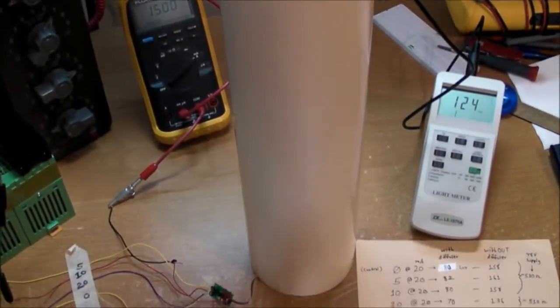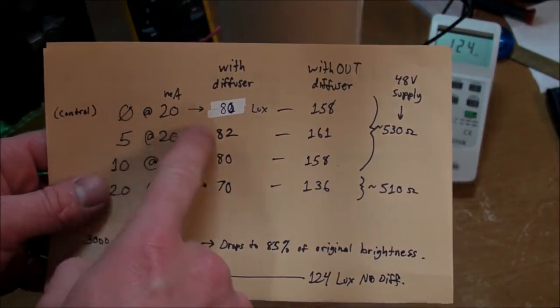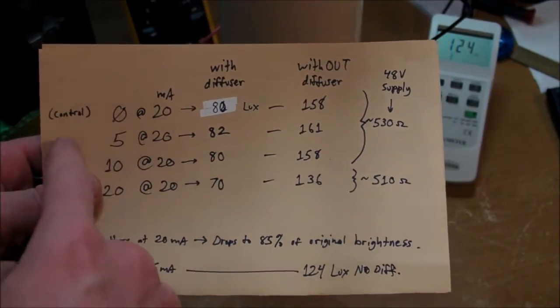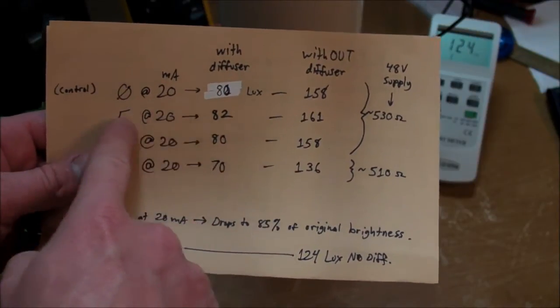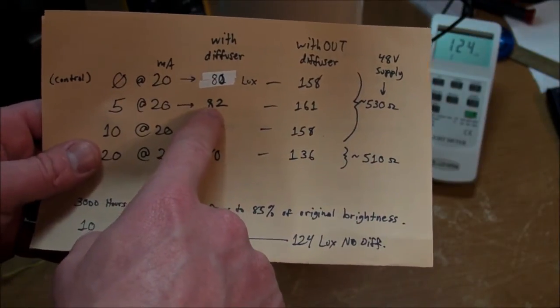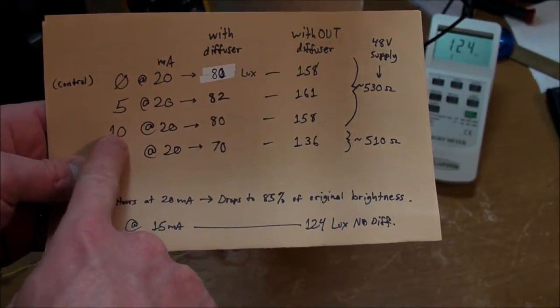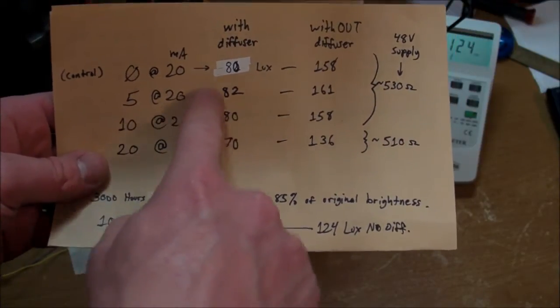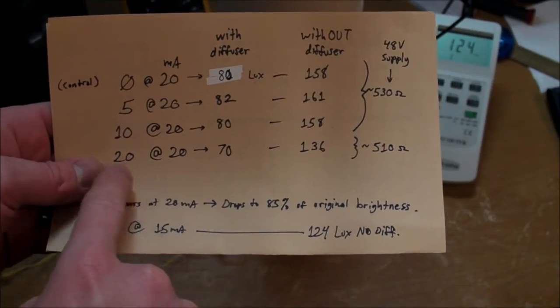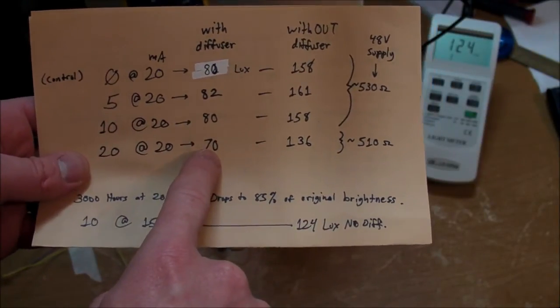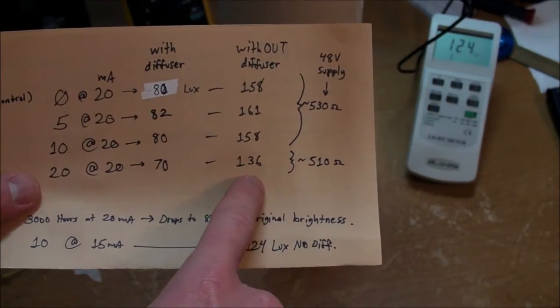And here's the results. So first I did it with the diffuser in place. And we got the first one that was off running at 20 milliamps, 80 lux. And then 5 milliamps at 20, 82. And then back down to 80 for the one that was running at 10 milliamps for 3,000 hours. And that's all not very significant difference, it's pretty much the same. Then we get to the one that was running at 20 milliamps, and that's down to 70 lux with the diffuser.